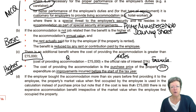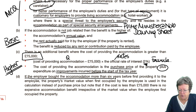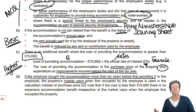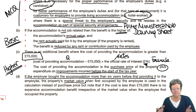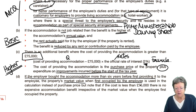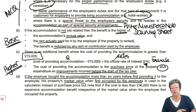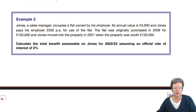However, if the employer bought the accommodation more than 6 years before first providing it, you use market value instead. This is to get more tax — if it was bought 20 years ago, the property value has gone up dramatically. So you use the market value when it was first occupied by the employee in the formula instead of the purchase price.